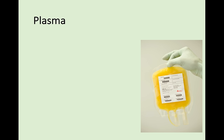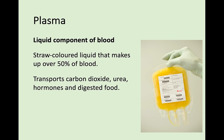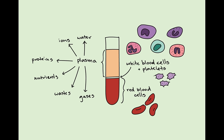The final part is plasma. Plasma is very important and what it looks like is a yellow liquid - you don't normally think of your blood being a yellow liquid, which is quite surprising. Plasma is the liquid component of your blood, making it fluid. It makes up over 50% of your blood and assists in transporting carbon dioxide, urea, hormones, and some digested food products around your body. So you have your red blood cells, white blood cells, platelets, and plasma - you need to know what all of them do.